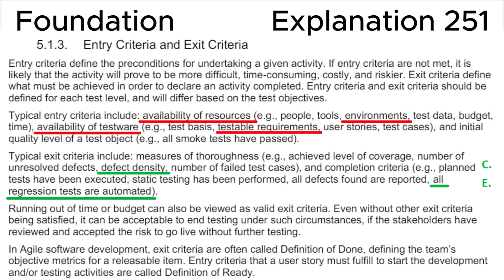Typical exit criteria include measures of thoroughness, for example: achieved level of coverage, number of unresolved defects, defect density, number of failed test cases; and completion criteria, for example: planned tests have been executed, static testing has been performed, all defects found are reported, all regression tests are automated.